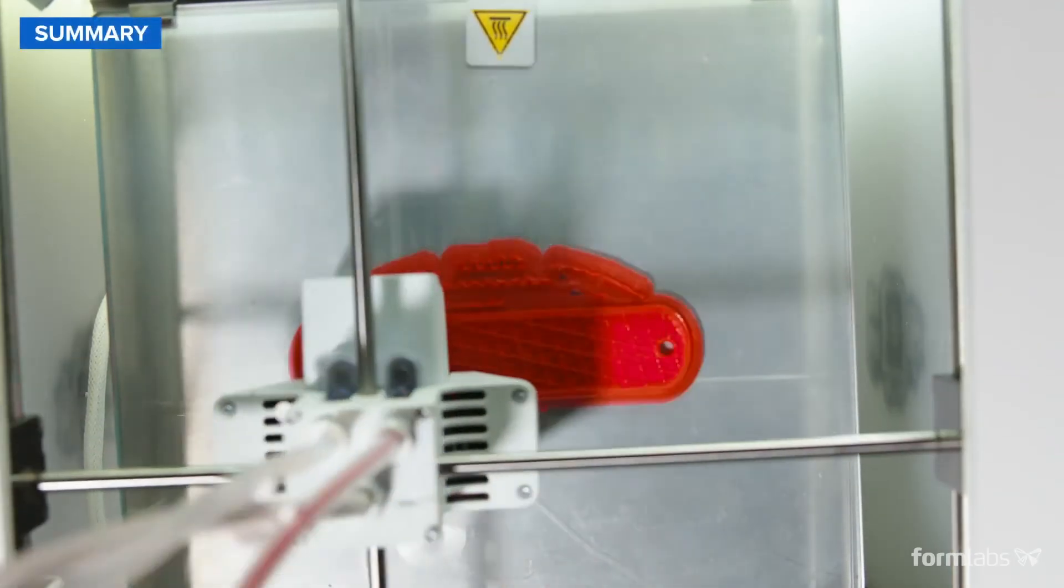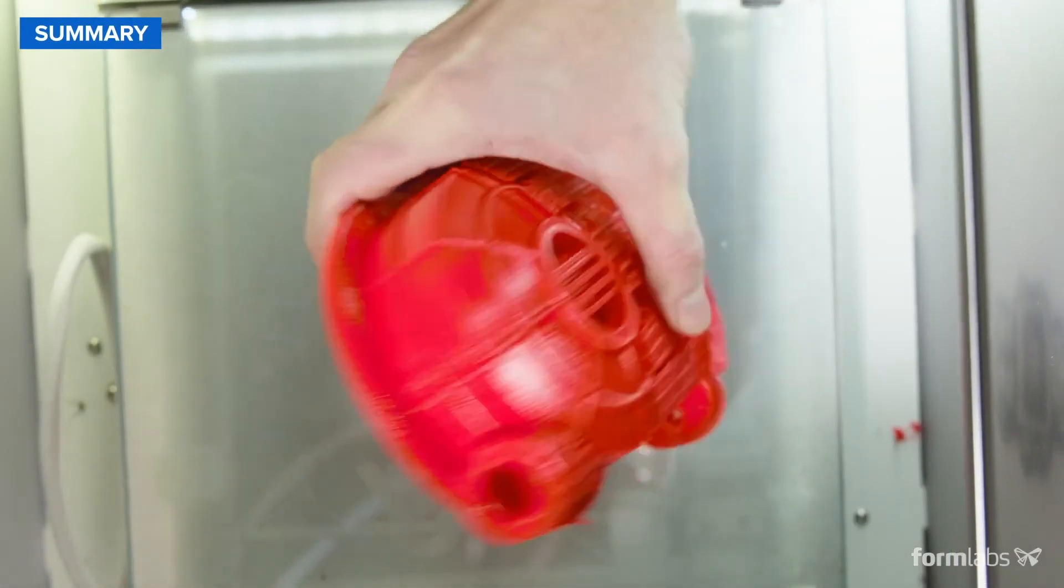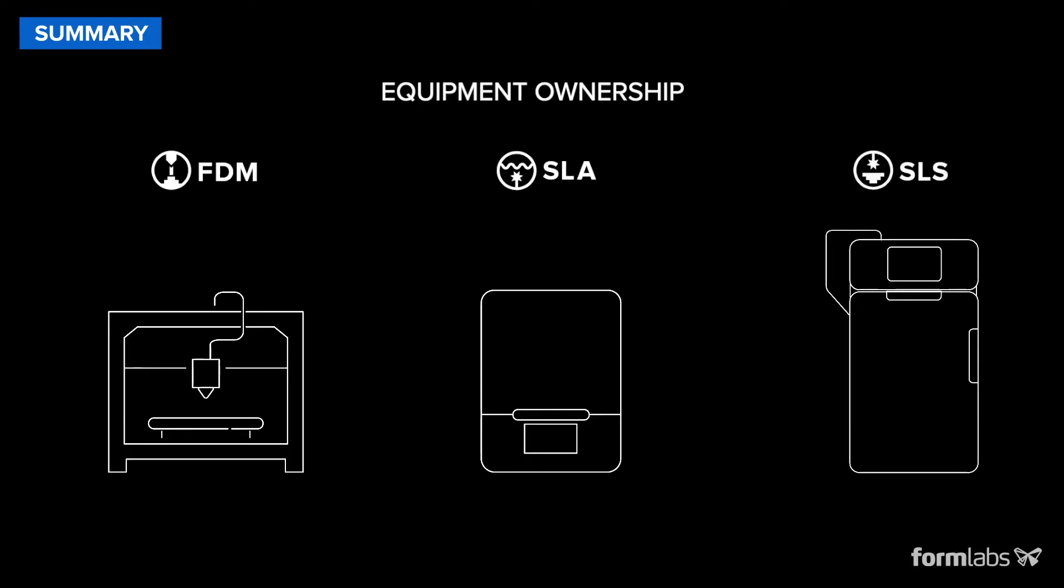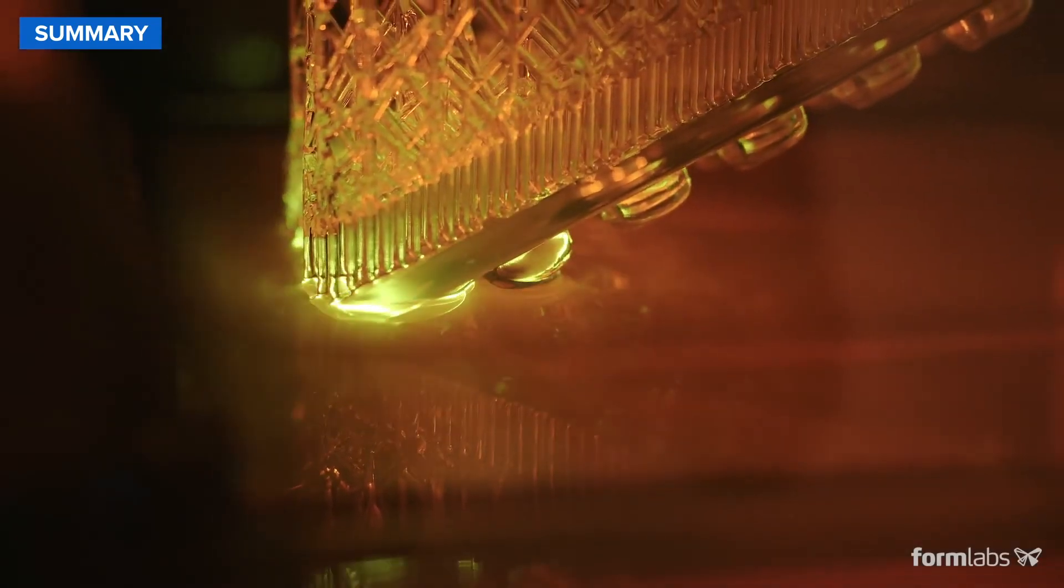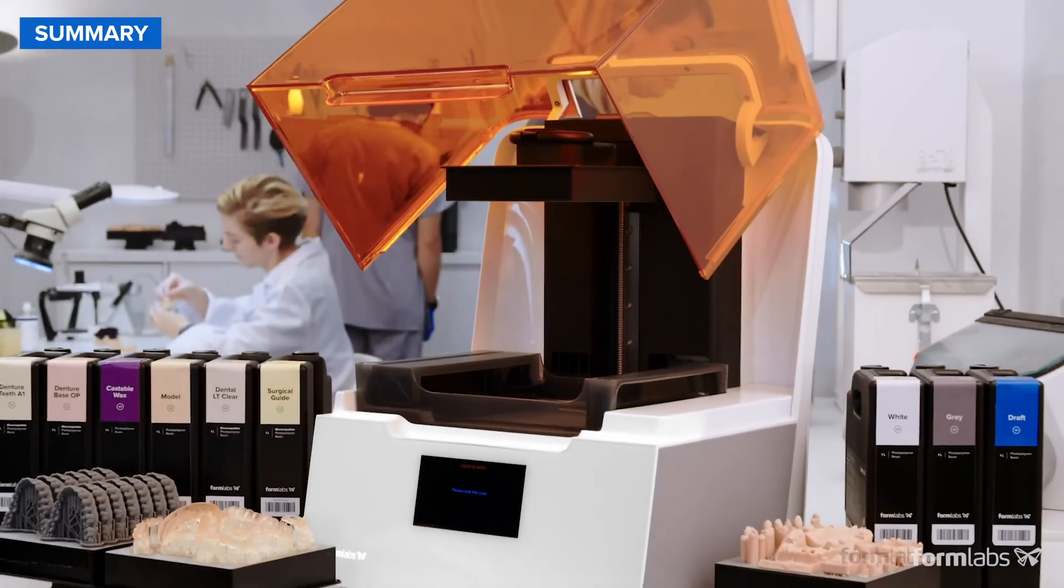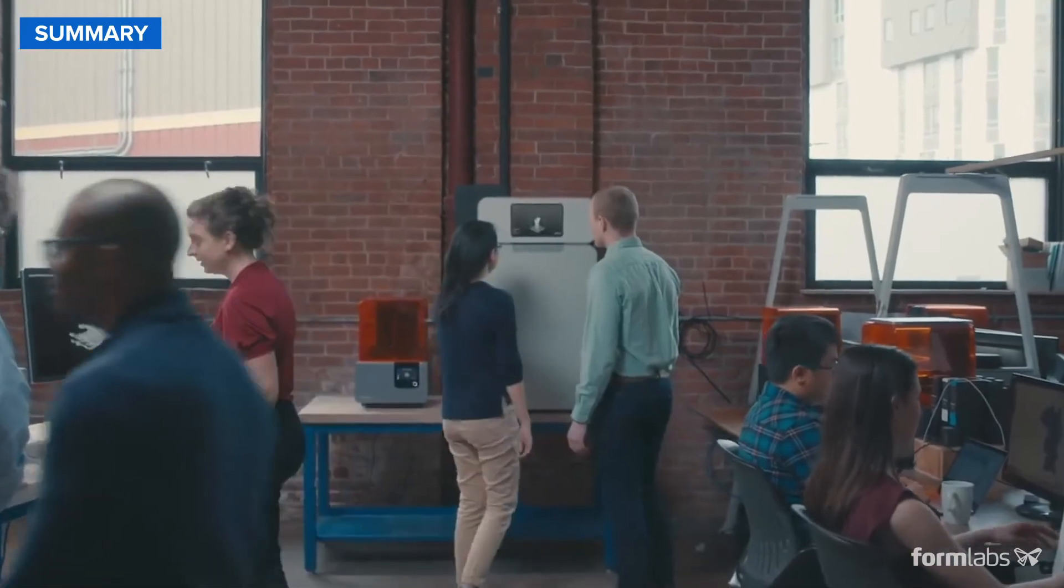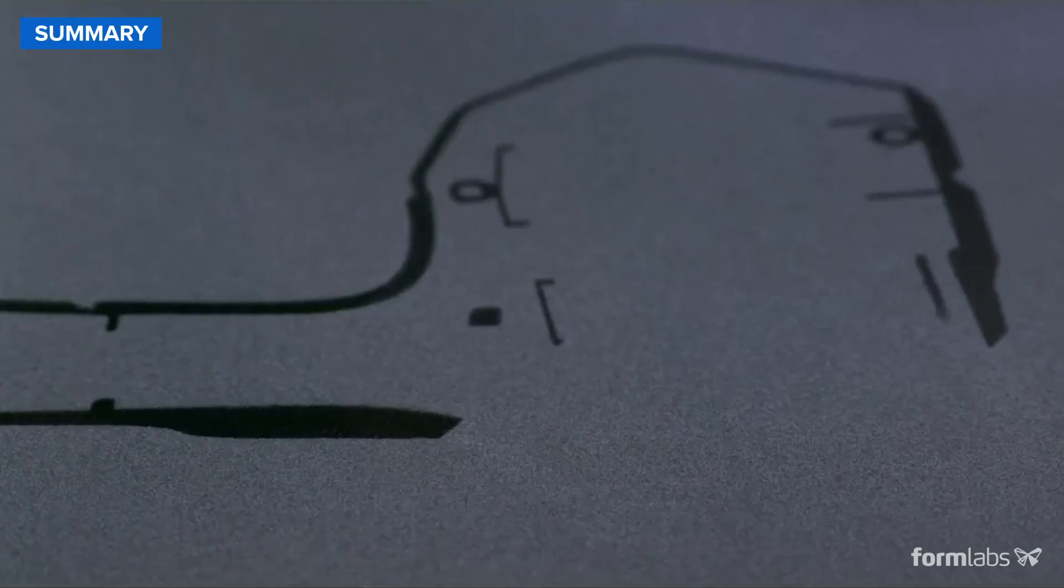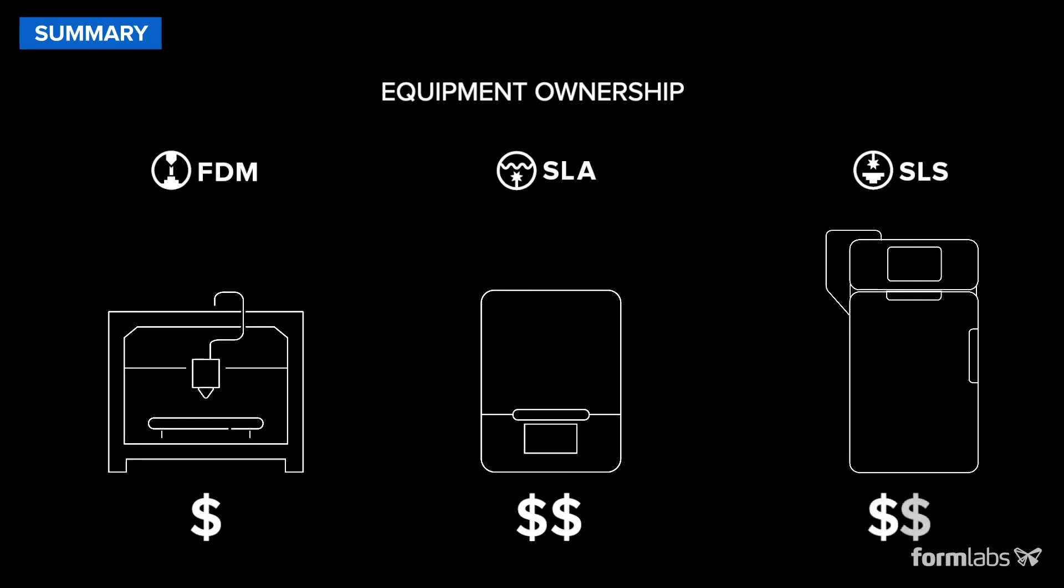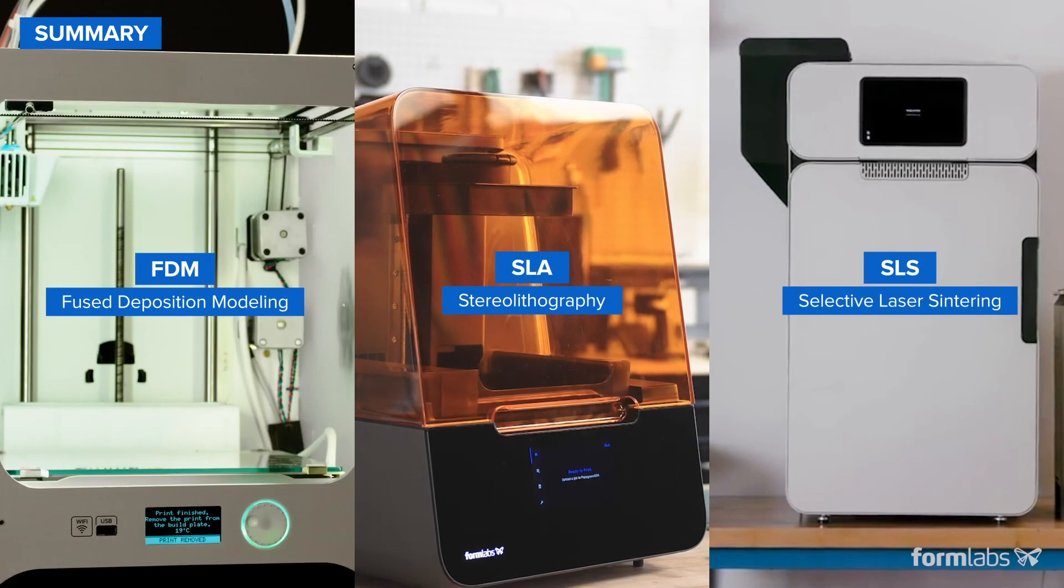To sum up, FDM will get you the cheapest parts if you're printing only relatively simple prototypes in limited numbers. SLA offers higher quality at a slight premium, but the difference quickly diminishes when you print complex designs or larger batches due to the less labor-intensive post-processing. Lastly, SLS is the most cost-effective process for producing medium to large volumes of high-quality functional parts. However, costs will differ from manufacturer to manufacturer.